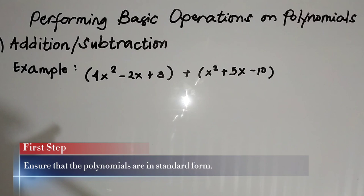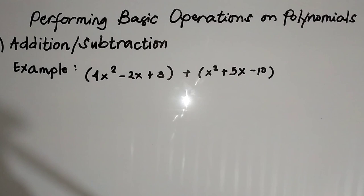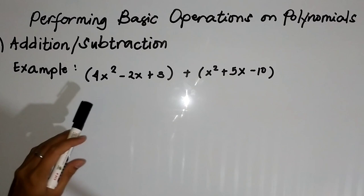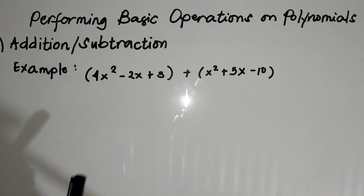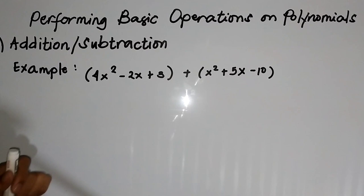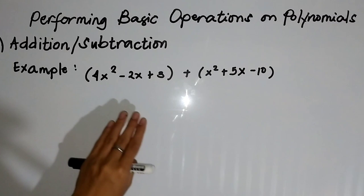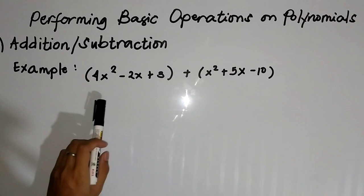The first step is to ensure na yung polynomials nyo ay naka-arrange sa standard form. Ano yung standard form? Sinasabing standard form natin sa polynomials, kailangan yung arrangement ng terms natin sa polynomials from left to right — yung nauuna dapat ay ang term na may pinakamataas na degree. So in our example here we have 4x squared minus 2x plus 3. Titignan mo yung term na may pinakamataas na degree: we have 4x squared, siya yung may pinakamataas na degree, so siya dapat yung nauuna.